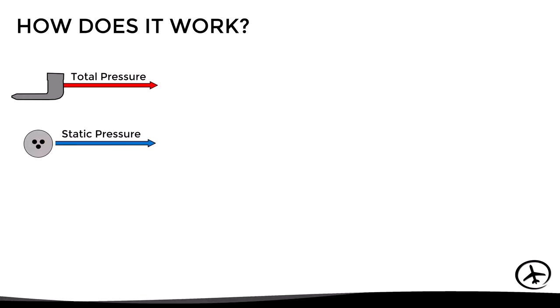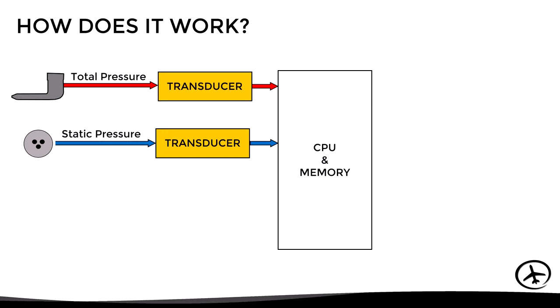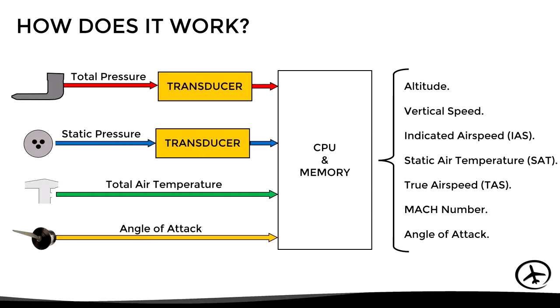The total and static pressure information from the sensors is first converted to an electronic signal by pressure transducers, then sent to the microprocessor and memory of the ADC. Importantly, only the pitot tube and static port require a transducer, since the total air temperature probe and the angle of attack probe already have a transducer built into the sensor itself, and their information is sent directly to the processor.